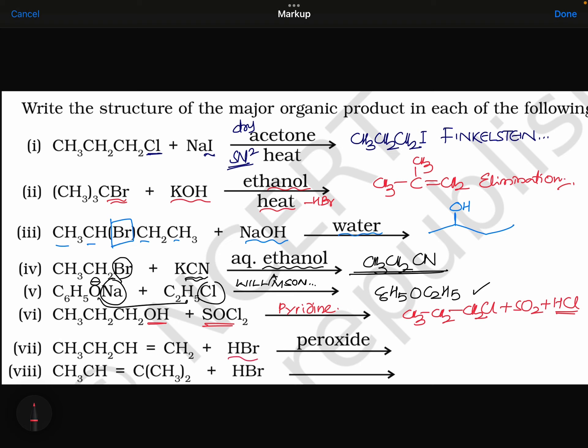Then coming to this HBr peroxide. In this case, you will be getting the hydrogen at this place and bromine at this place. So, anti-Markovnikov addition. 1-bromobutane you are going to get. 1-bromobutane. Anti-Markovnikov addition.